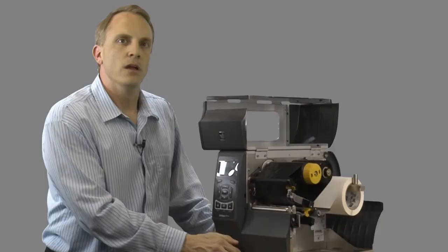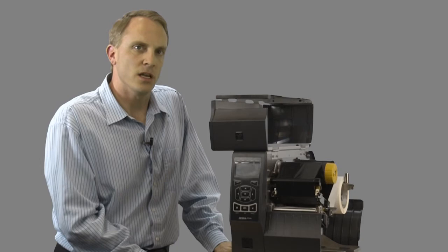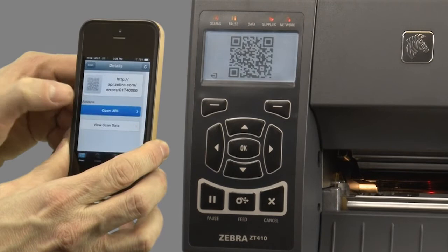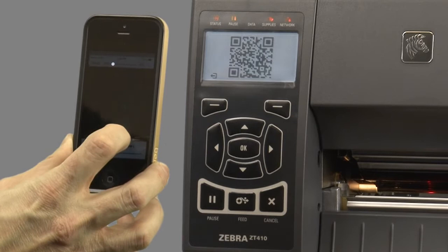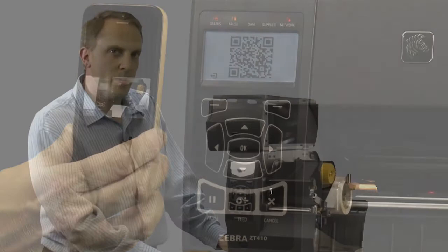The ZT400 boasts a new intuitive user interface, including a sealed keypad for easy cleaning and easy to interpret status indicators. Dynamic QR codes are assigned to the printer error states, which enable the user to access direct web content, including videos and tech support documentation via scanning with a typical QR code application on your smart device.